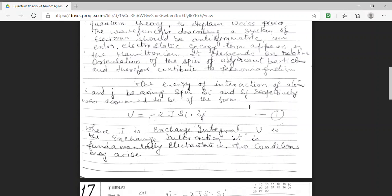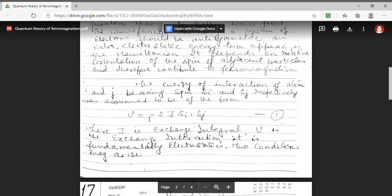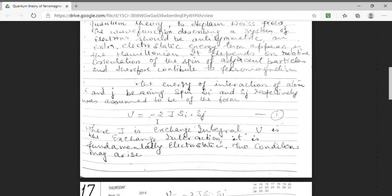And we will assume only the interaction between nearest neighbors and higher order interaction will be ignored. Assuming this, we have the interaction energy between the spins to be of the form U = -2J·Si·Sj. Here, J is exchange integral. And U term is electrostatic in nature and it is exchange interaction between spins.